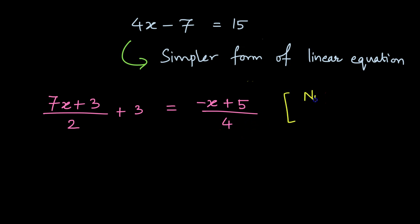Now this equation is not in a simpler form and why this is not in a simpler form is because we cannot visualize this straight away in this form ax plus b is equal to c where a, b, and c are constants like here a, b, and c.